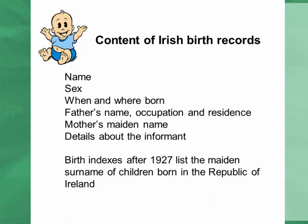Another thing to note: in the birth indexes themselves, after 1927 the maiden surname of the mother is listed in those columns of birth indexes. That can be very useful if you're trying to trace a specific family where the mother's surname is somewhat uncommon. If you're looking through the index for that surname trying to find other children, you can match it up by the maiden surname of the mother. Unfortunately, Northern Ireland did not include this information, but the counties in the Republic of Ireland do.